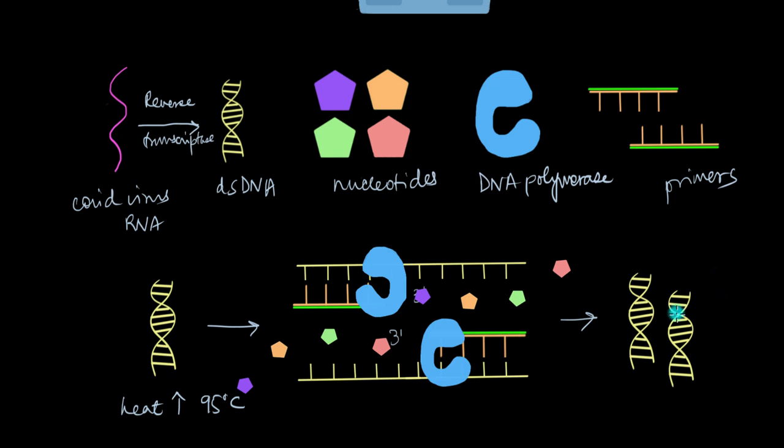So this will keep on increasing. So from one cycle we get two, the next will get four, the next one will get eight, so on and so forth. So this is how it exponentially increases the amount of nucleic acid, aka amplification of DNA.